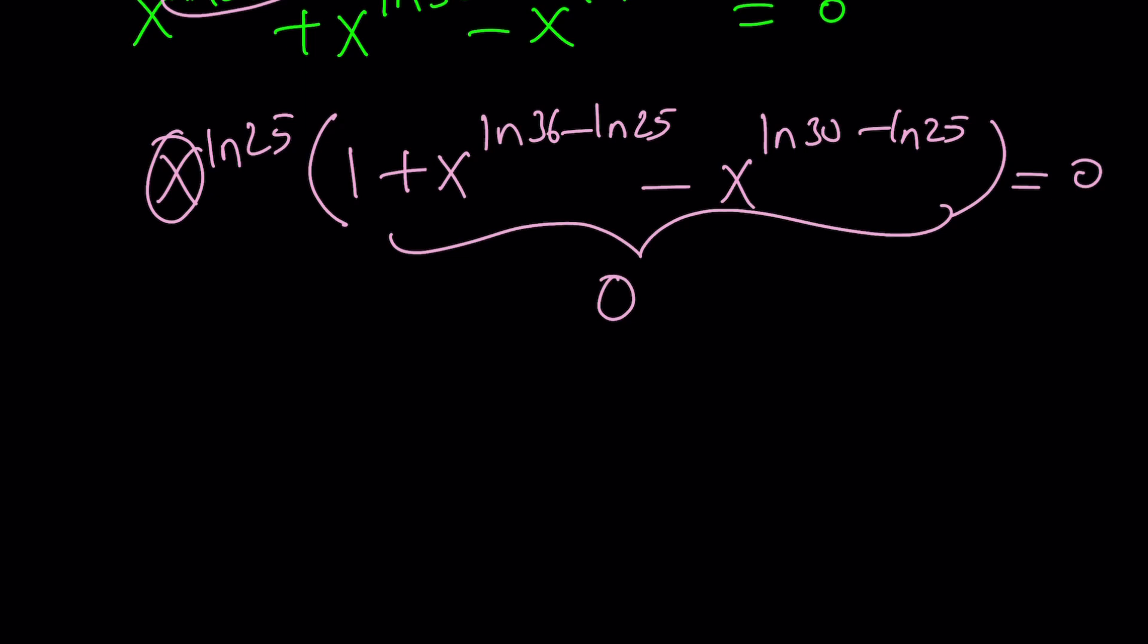We're going to be using a very special identity or formula. If you have a to the power log c with base b, then we could switch the outer numbers. What does that mean? You see the a, you see the c, they could be switched. This will be equal to c to the power log a with base b.